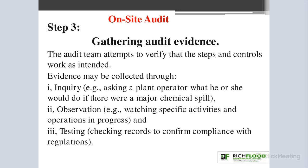The third step in the on-site audit is gathering audit evidence. The audit team attempts to verify that the steps and controls work as intended. These evidences can be collected through enquiries — for example, asking a plant operator what he or she would do if there were a major chemical spill. If controls are in place and properly documented, the plant operator should have an understanding of what should be done.